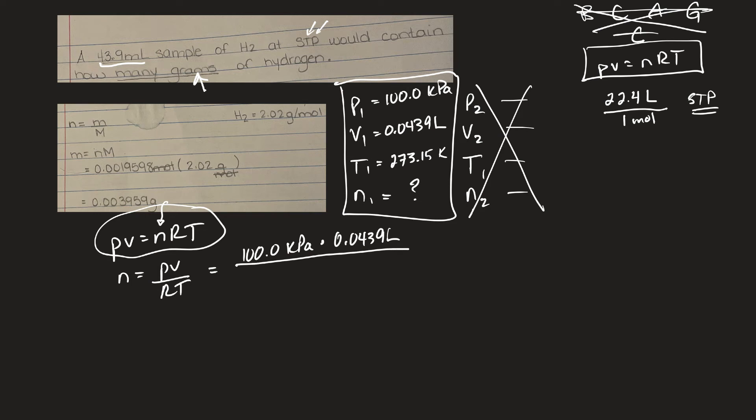And that's the universal gas constant. So 8.314, I think, is what we use. And that's kilopascal liters per Kelvin mole. And when I say per, I'm just going across that line there instead of putting another fraction down below. Times the temperature, and the temperature has to be in Kelvin, which it is there. So 273.15 Kelvin.